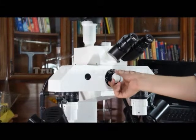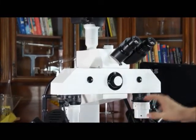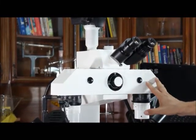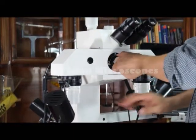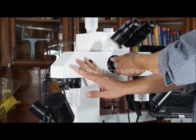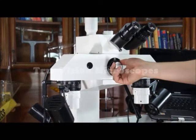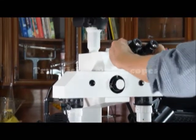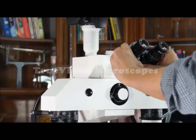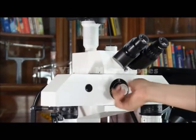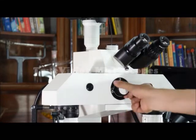This is the selector knob where you can select the image from the right side, or you can select the image from the left side, or you can select to have portions of both images in your field of view. You just turn the knob to get the image that you need.